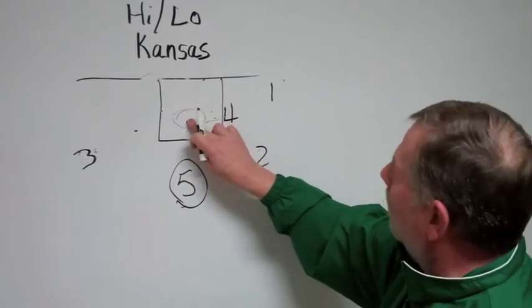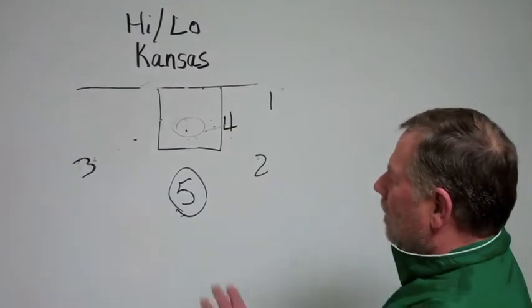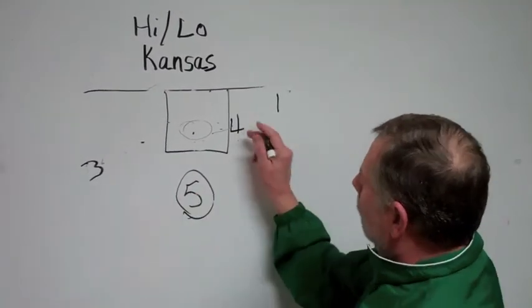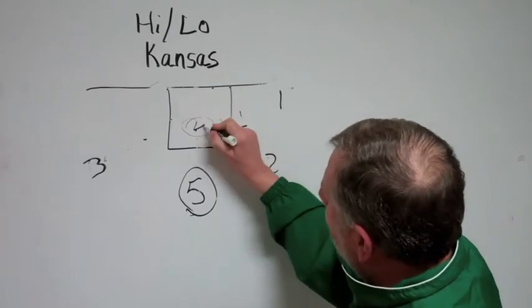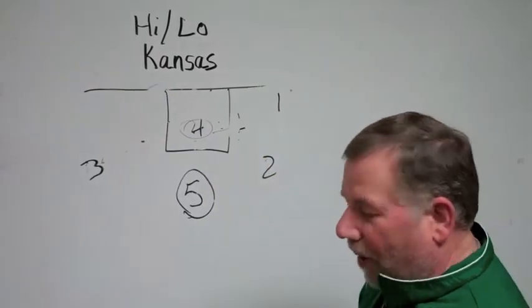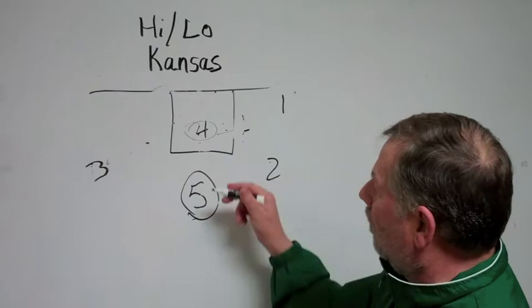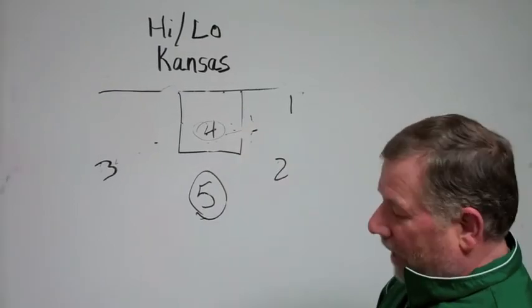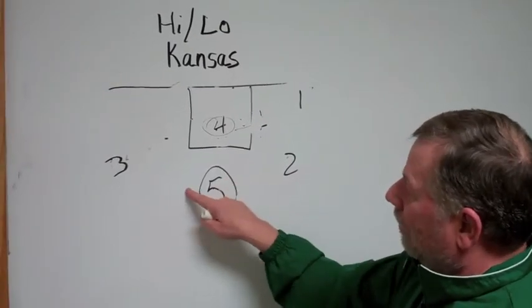And we always say to the post players, five here and four coming into the middle, that you're buddies. Your first objective is to look for your buddy inside. Second is to look for your shot. And third, reverse the ball.